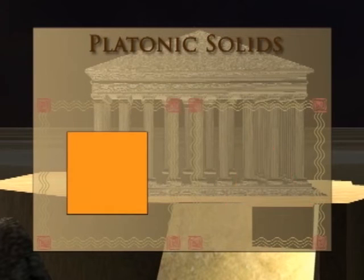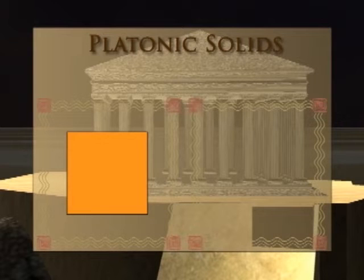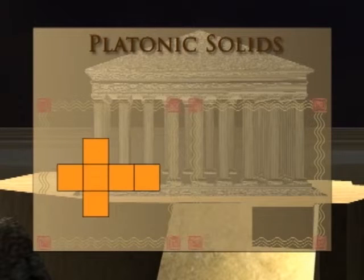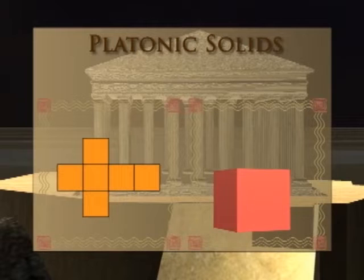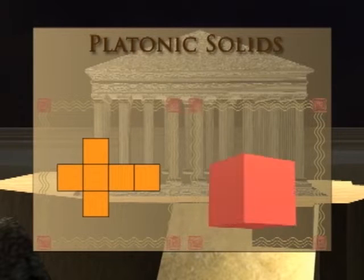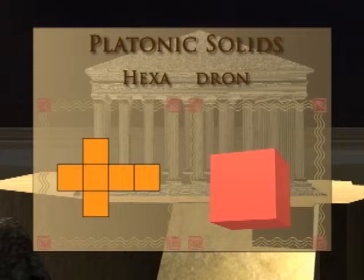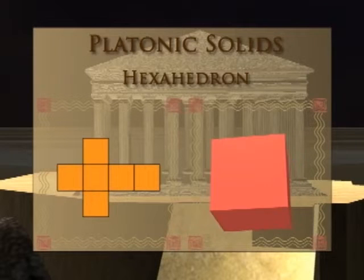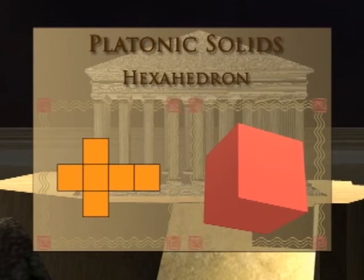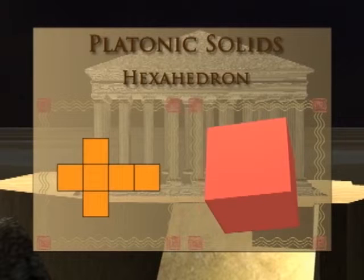Now, look at this square, which is a regular quadrilateral. We use that square to construct a two-dimensional net. We fold this net to construct a cube, which is another Platonic Solid, also referred to as a hexahedron. The "hex" in hexahedron refers to six, which is the number of sides in a cube.